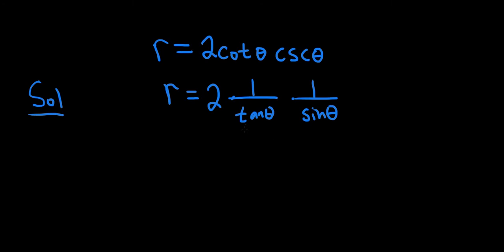Now a good next step would be to clear these fractions. We can multiply both sides by sine and by tangent. When we do that, on the left-hand side, we'll get r sine theta tangent theta.